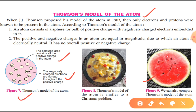Have a look at this watermelon. The red part represents the positive sphere, and those seeds which you see embedded in it represent the electrons. In this manner we can compare Thomson's model with a watermelon.